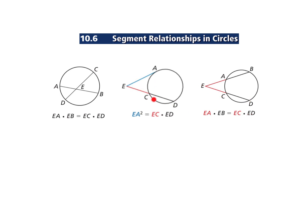Now let's look at the middle case. EC is again the part of the segment times the whole segment. But if you look at this tangent here — it's not a secant, there is no separate part — so the part EA times the whole, which is EA again, gives you EA squared.